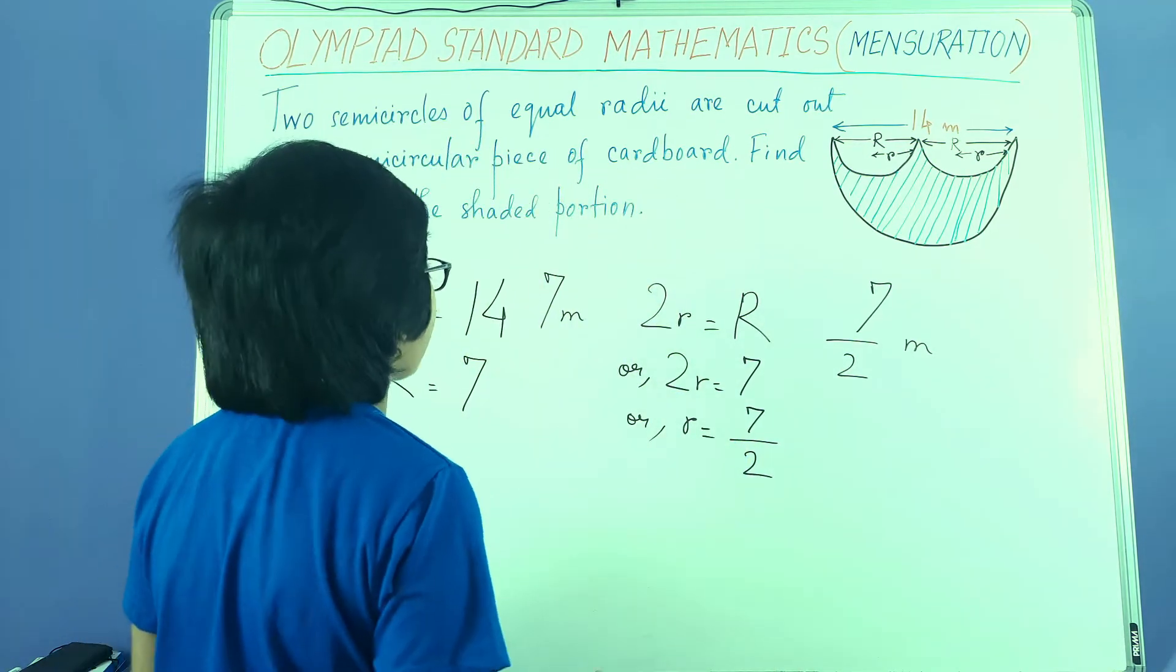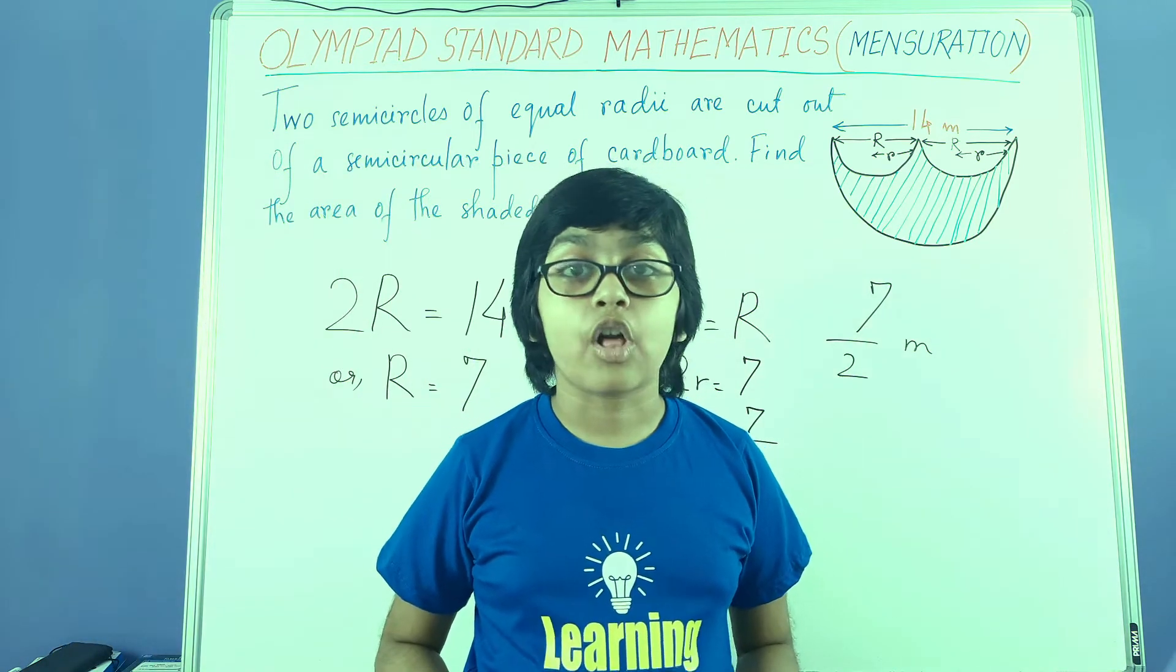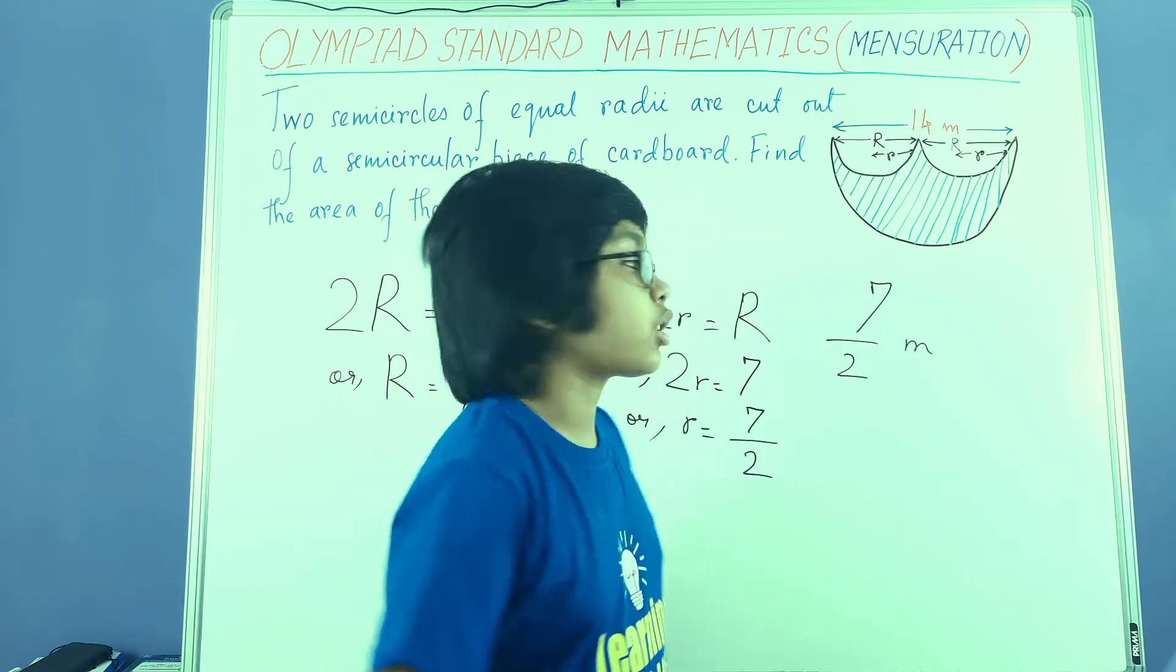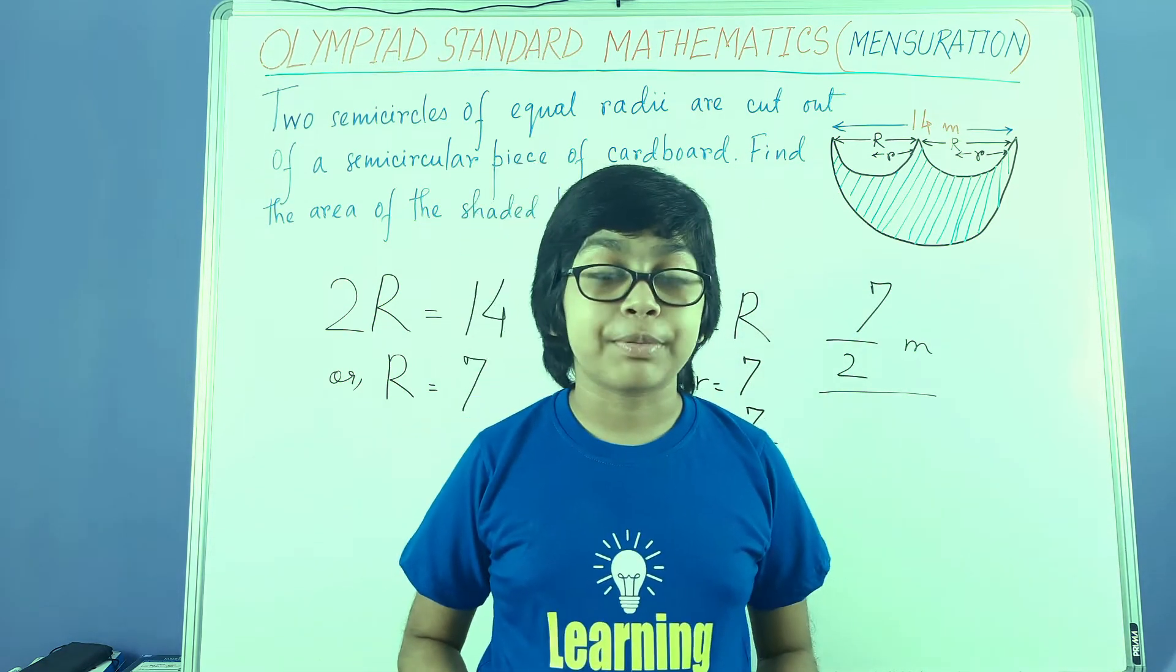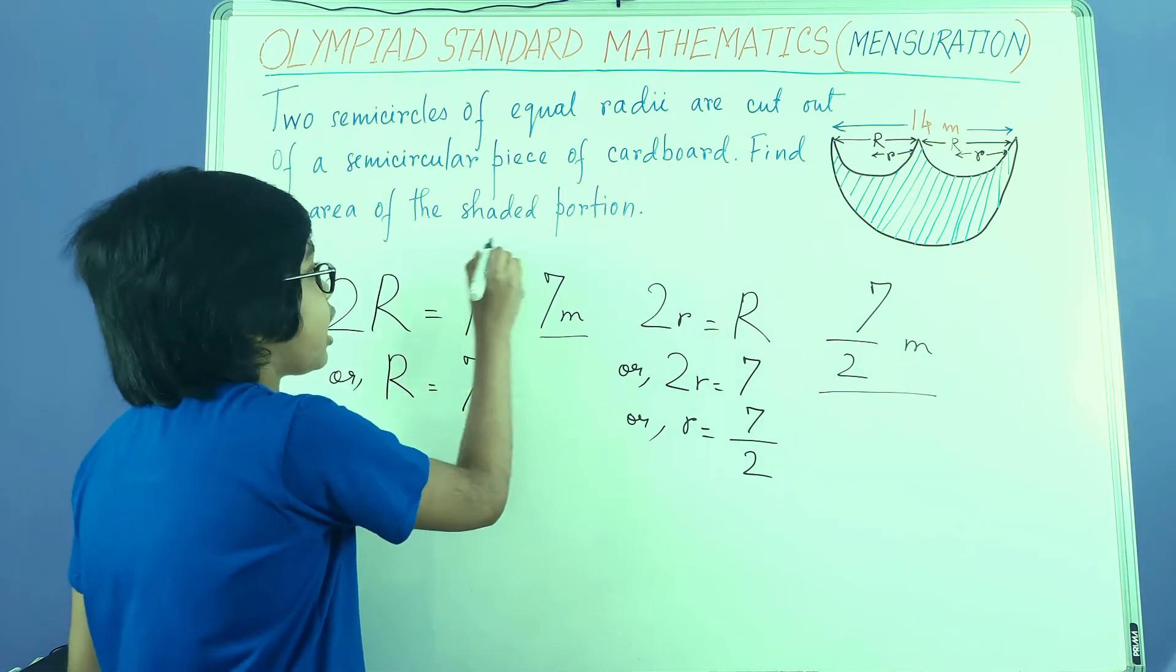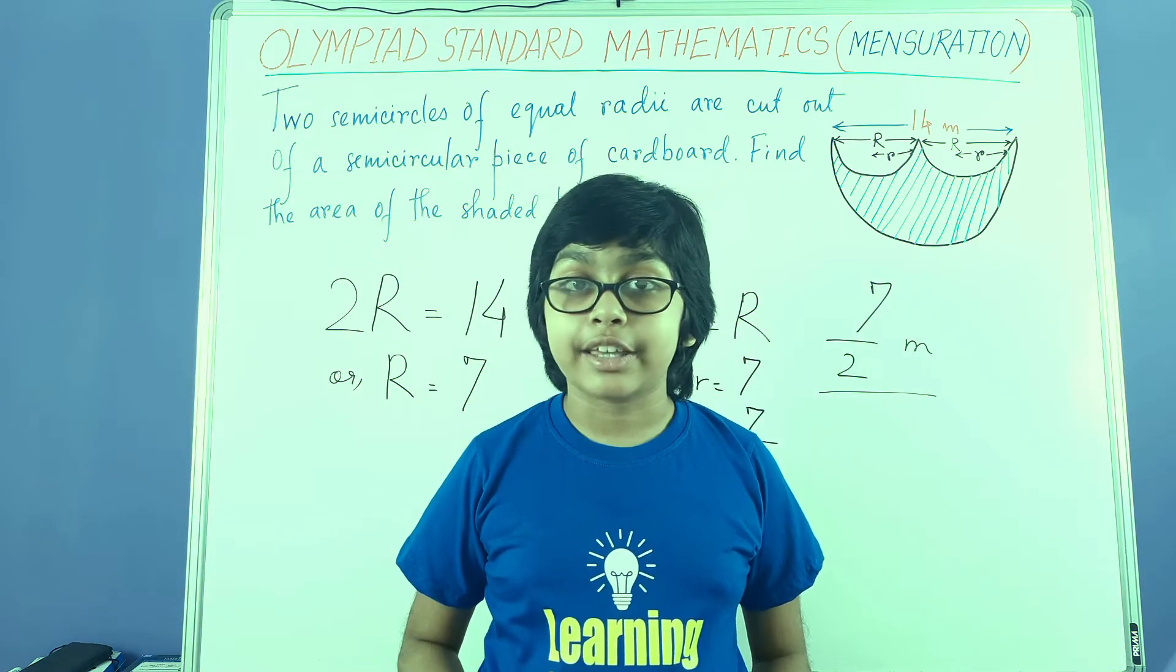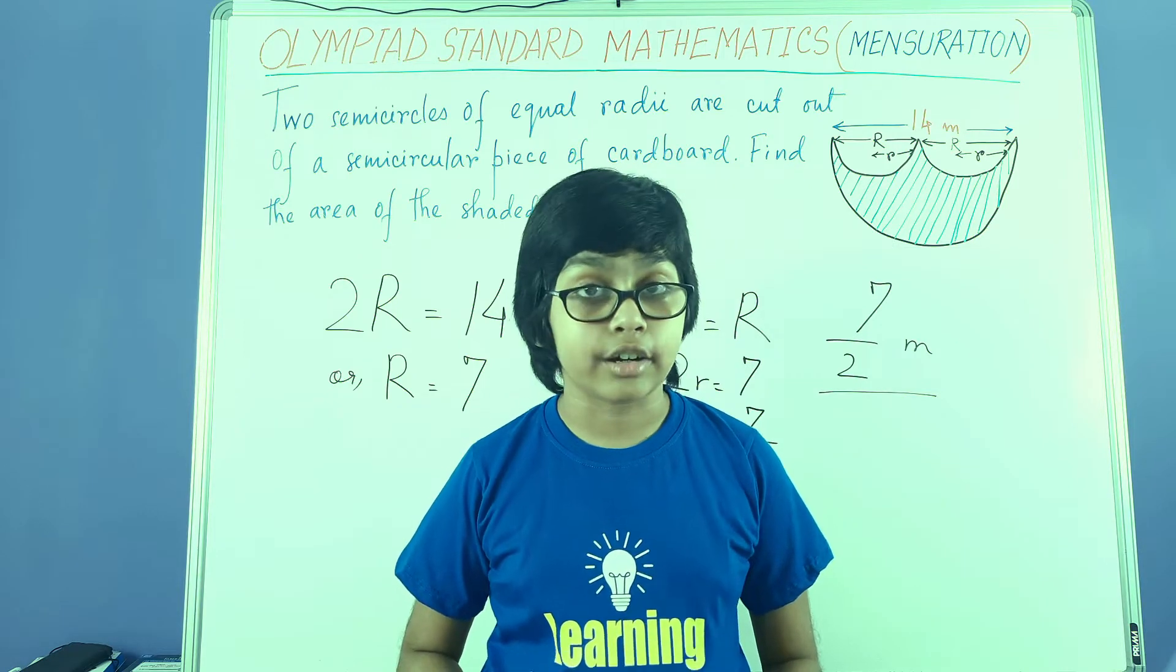So again, let's recall our values. Here, the radius of the big semicircle is 7 meters, and the radius of the small semicircle is 7 by 2 meters. Using this information which we got just now, we will now make an expression to find out the area of the shaded portion. Just remember these values, and I'm erasing the board so we can move on to finding the shaded area.